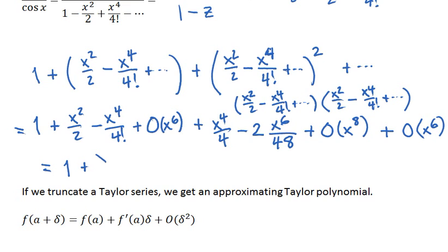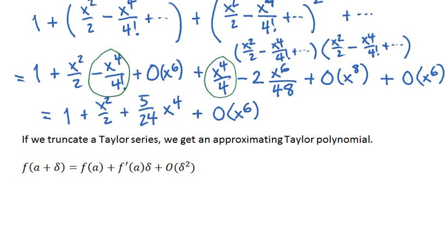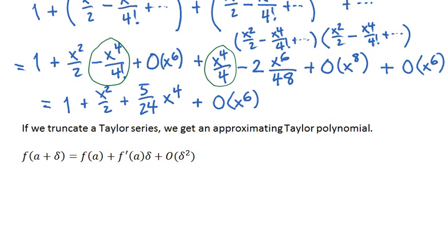So if we are happy to stop at the fourth order term, we have 1 plus x squared over 2, and then on the fourth power we have this fourth power here, this fourth power here. So that's minus 1 over 24 plus 6 over 24, so that gives us plus 5 over 24 x to the fourth, and then the next term omitted is x to the sixth. So very mechanical but also quite lengthy.